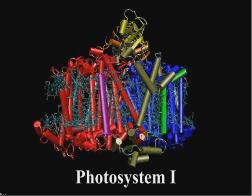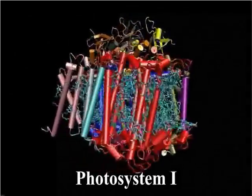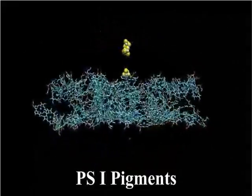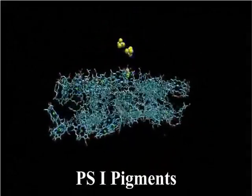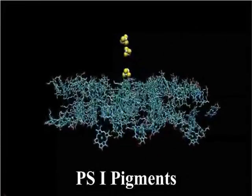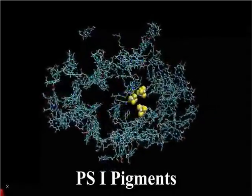If we remove the protein components, then we can more easily see the arrangement of the chlorophylls, here represented as the blue ring structures with the magnesium atom, shown as a green sphere, held in the center of the chlorophyll ring. These chlorophyll molecules, called antenna chlorophyll, efficiently absorb visible wavelengths of light.